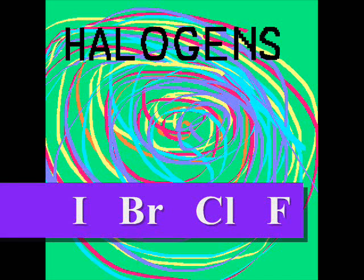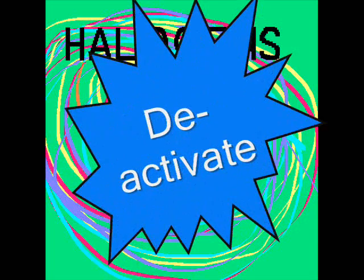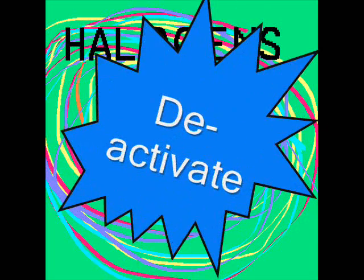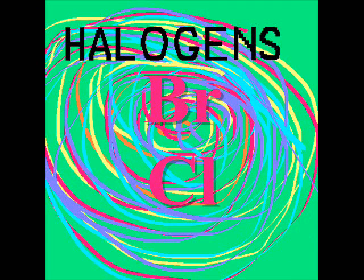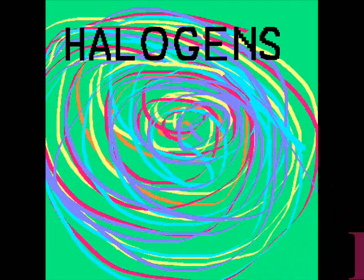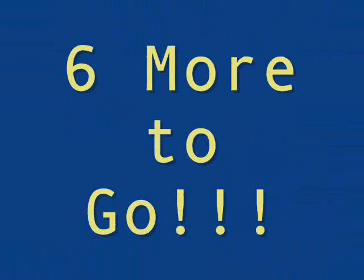Halogens are crazy mixed up, guys — they ortho-para direct before your eyes, but deactivate — yeah, that's the big surprise! First in the line comes iodine, bromine and chlorine, reactive fluorine. Here we are neutral at hydrogen — six more to rehearse, there in the next verse.